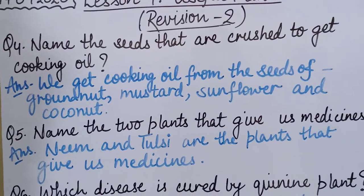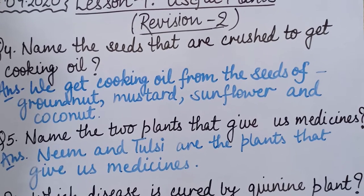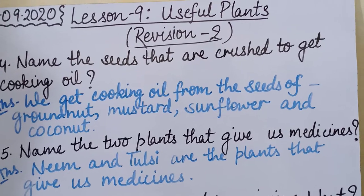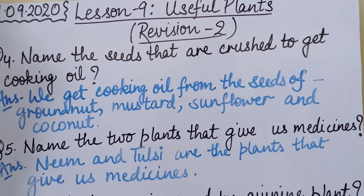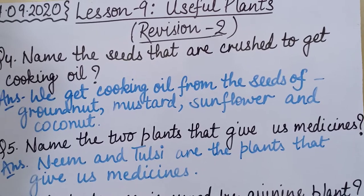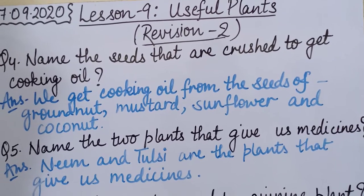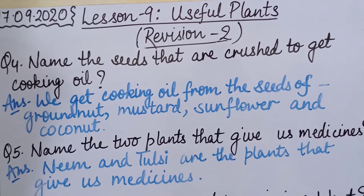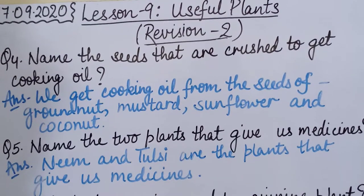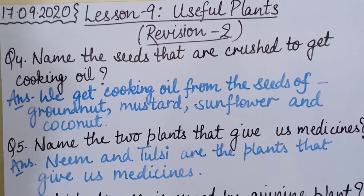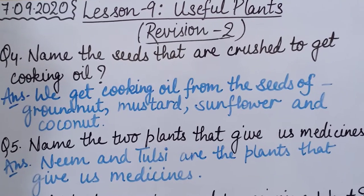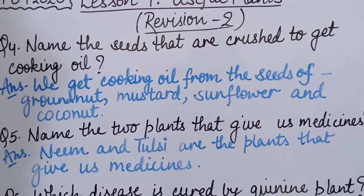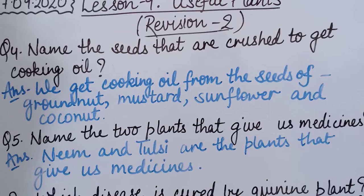So children, remember: you can come for copy correction from Monday to Saturday, and copy correction timings are from 10 a.m. to 1 p.m. Till my next video, I hope you will all complete your work. Those who have not completed the previous work, please start doing it neatly and carefully. I will check the copies — there are 10 marks for copy correction. So till my next video children, bye-bye, take care, stay at home, stay safe.